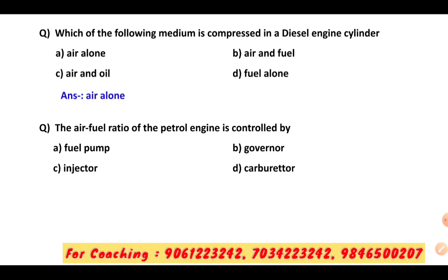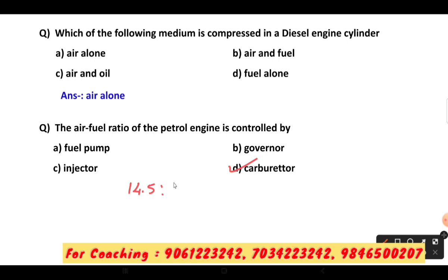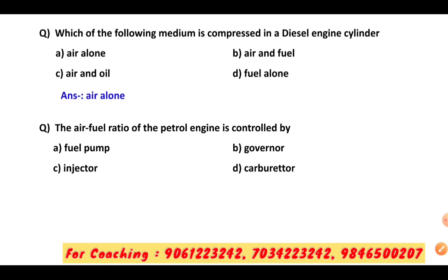The air-fuel ratio of a petrol engine is controlled by the carburetor. The carburetor controls the air and fuel mixture. The stoichiometric air-fuel ratio is 14.5 to 1.